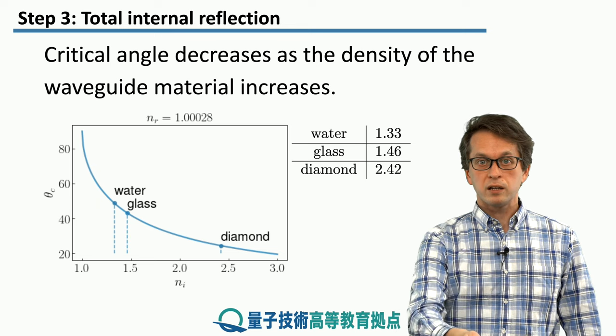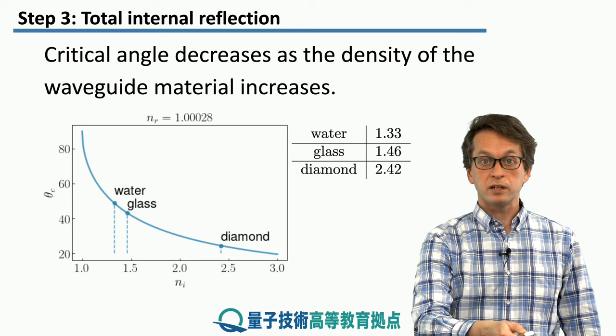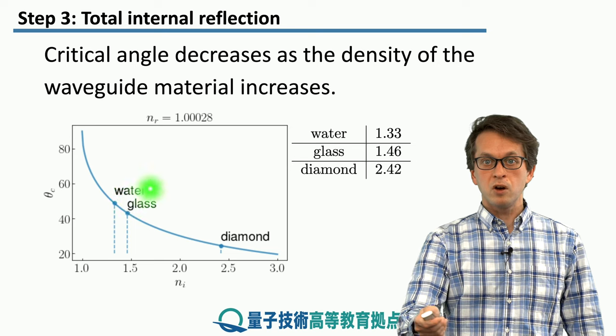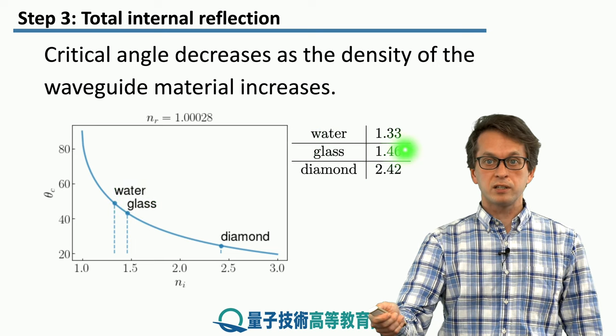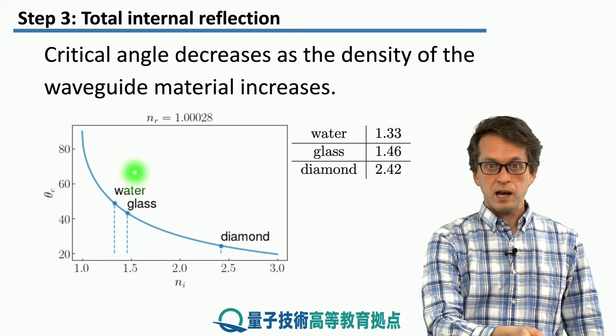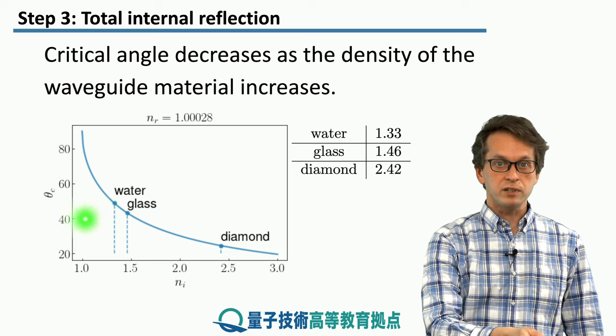So we see that as we are increasing the density of the material, we are decreasing the critical angle beyond which we get total internal reflection. For example, if we look at the interface of water and air, water has a refractive index of 1.33. So that's this line over here, and we obtain a critical angle of around 50 degrees.